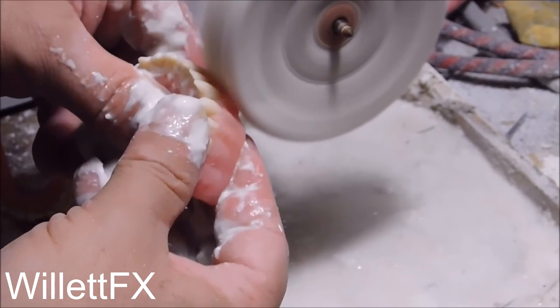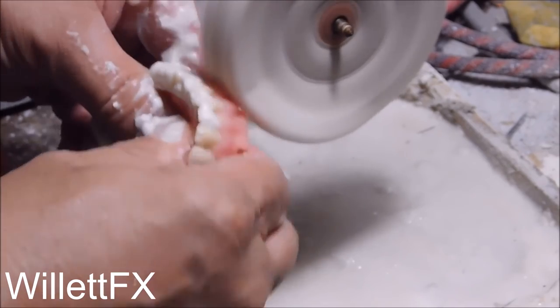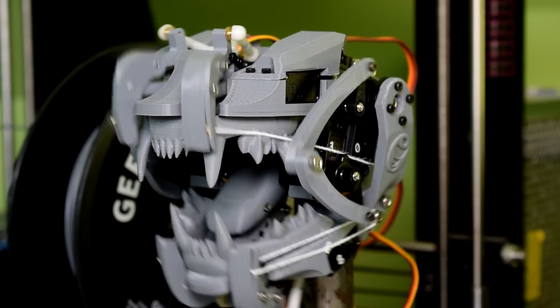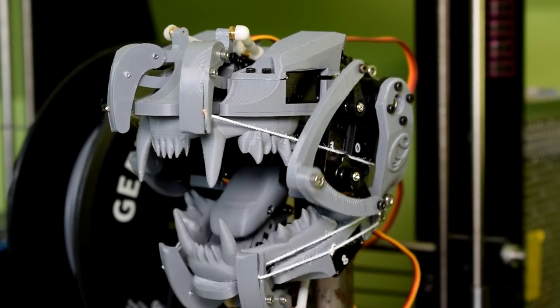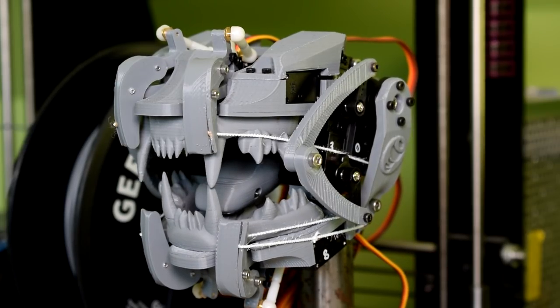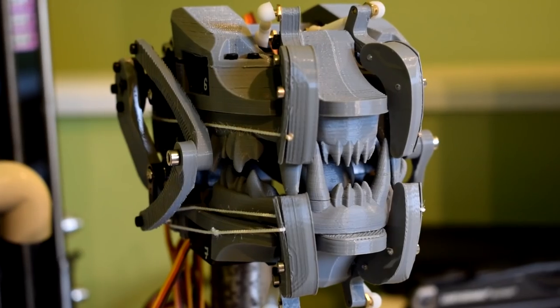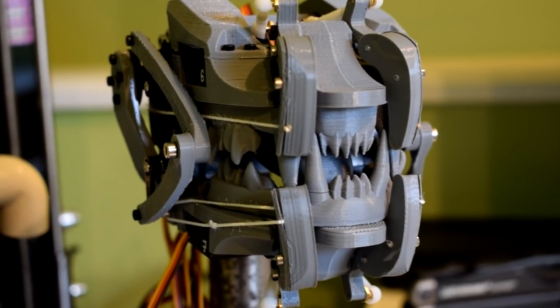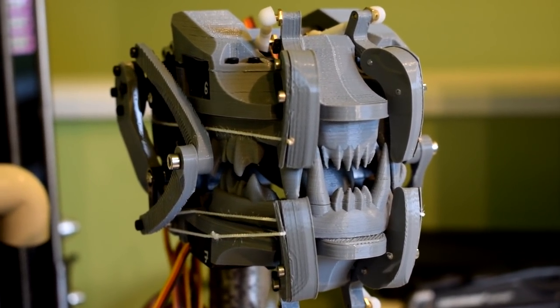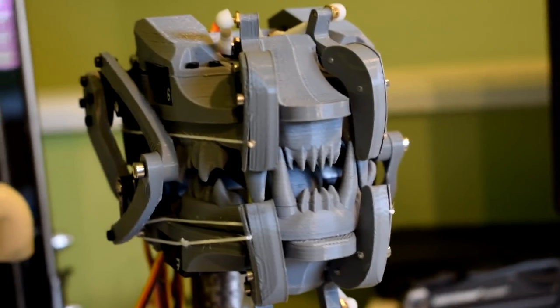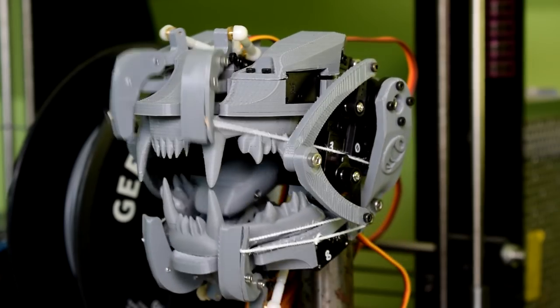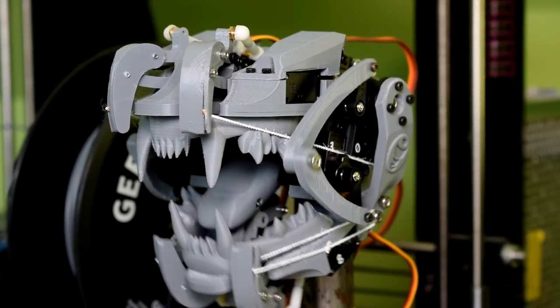So the first method, the simplest method, would be to just print out the teeth and paint them. This is what I did with my prototype when I was developing the programming side of the project, just sort of a placeholder. But you could also paint these up and it might look semi-realistic, but obviously it won't look that good. But that is an option.